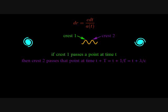Since the period of a wave is 1 over its frequency, and the frequency is the speed of light over the wavelength, it must be the case that crest 2 crosses the point at a time lambda over c after crest 1.